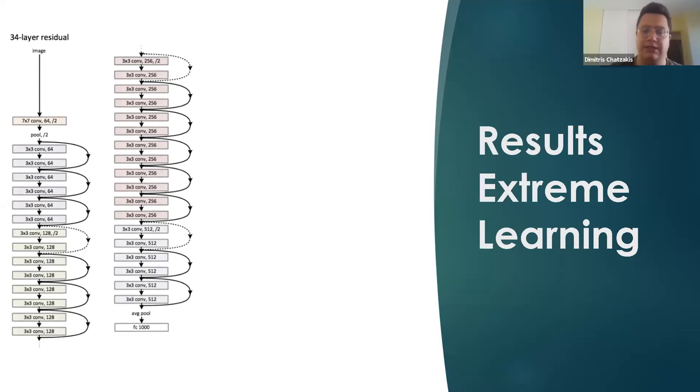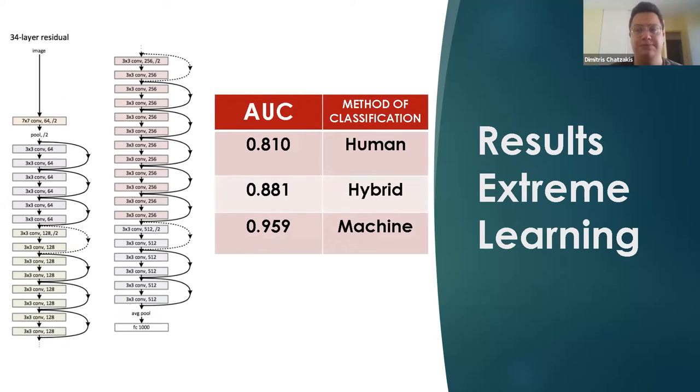In the next example we studied, it's the ResNet-34 architecture, which was not that innovative per se, because it's relatively old and it's mainly convolutional layers with a residual connection every third one. But what was really innovative about it and amazed us was the fact that it pitted human against machine and let the machine and the human compete for classification. So, in the first regime, they had humans do the classification and they had an AUC of 0.81. Then, a hybrid regime where the machine created a classification, but the human, after this suggestion, decided ultimately, and we had an AUC of 0.8881. And lastly, when just the machine classified, we had an AUC of 0.959.